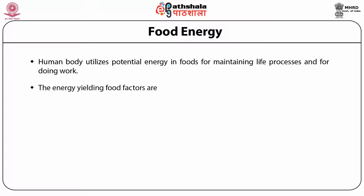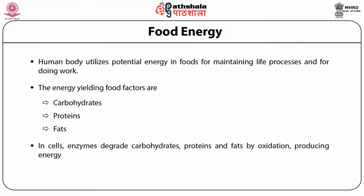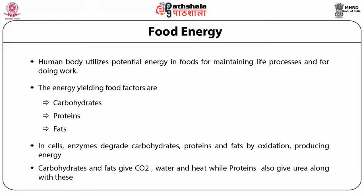The energy yielding factors are carbohydrates, proteins and fats. In cells, enzymes degrade carbohydrates, proteins and fats by oxidation, thereby producing energy. Carbohydrates and fats give carbon dioxide, water and heat, while proteins also give urea along with these.